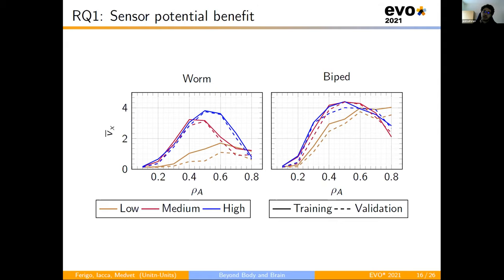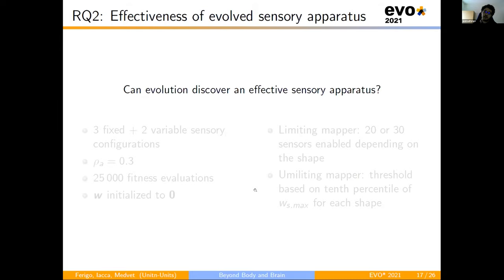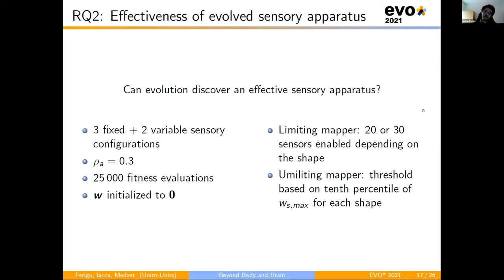And this leads to our second research question. Can evolution discover an effective sensor apparatus? We compare the three fixed configurations with the two variable ones, with a fixed value of 0.3 over 25,000 fitness evaluations. We set the limiting mapper to enable 20 or 30 sensors depending on the shape, and this is the number of sensors present in the high configuration. While for the unlimited mapper, we observed the weight distribution of the high configuration in the previous case, and selected 10% threshold. Moreover, we initialized the weight vector to zero. In this way, the evolution starts with all the sensors disabled. And we used as maximum sensory configuration the high configuration.